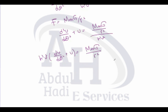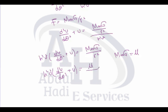We can write M·G = μ (mu), so the equation becomes d²u/dθ² + u = μ/h². This is the standard form of the orbit equation with the gravitational parameter μ.